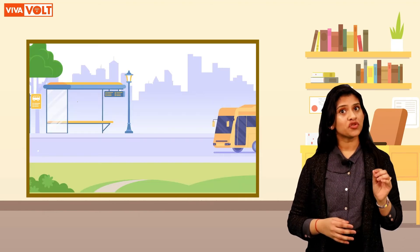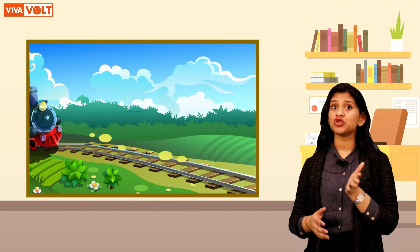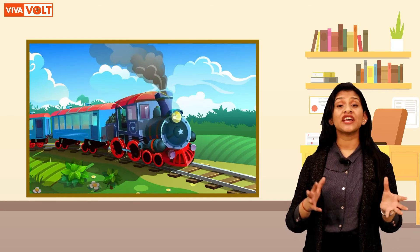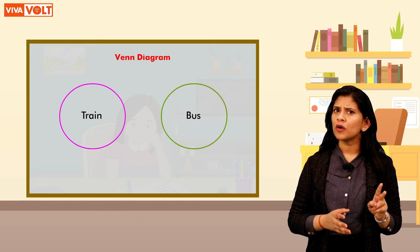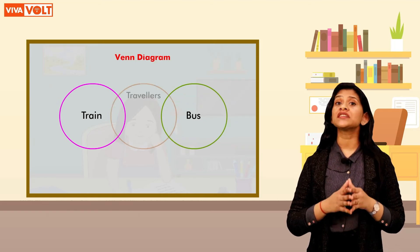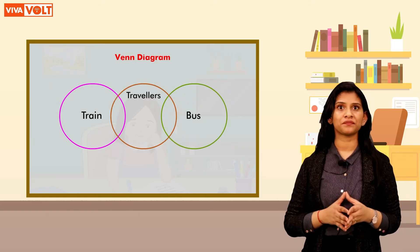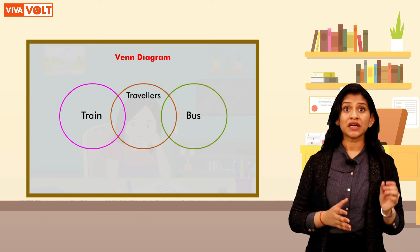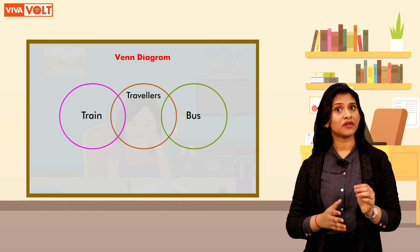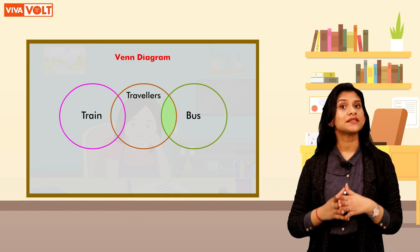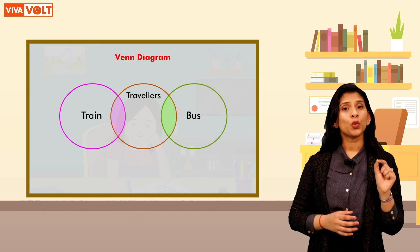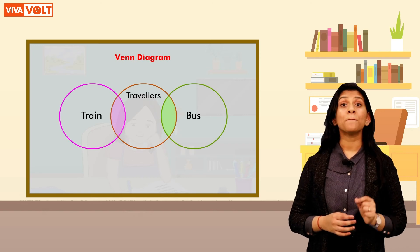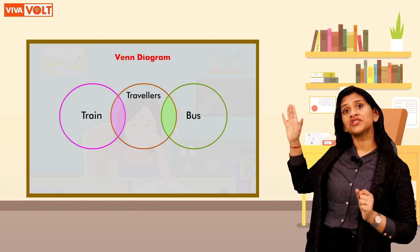Children, bus runs on the road and train runs on railway tracks, so they are very different modes of transport. These two forms of land transport find a connection with travellers. Some travellers like to travel by bus and some like to travel by train. So, we can represent this relation by the Venn diagram shown on your screen here.